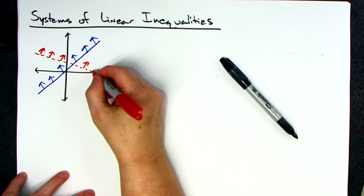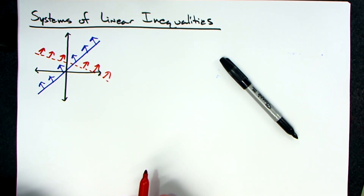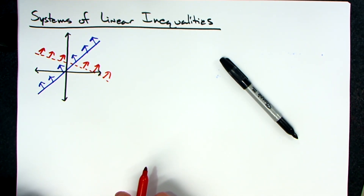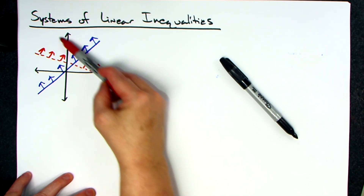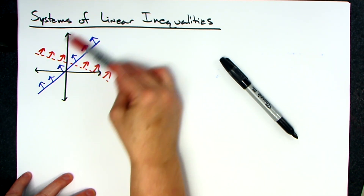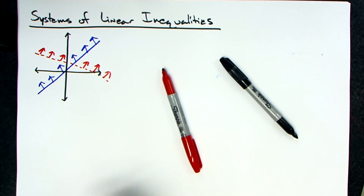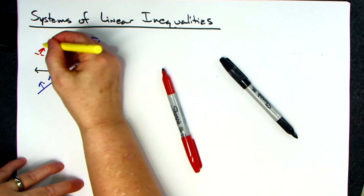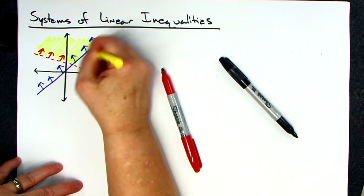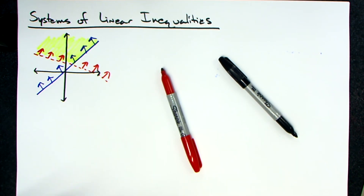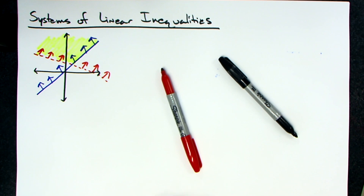Let's say the shading on this one was also on the top. I would probably do it like this as opposed to actually shading the whole entire thing. The question is: what part got shaded twice? If I shade above the blue line and above the red line, the part that got shaded twice is the solution. The part that gets shaded twice is where the solution is.